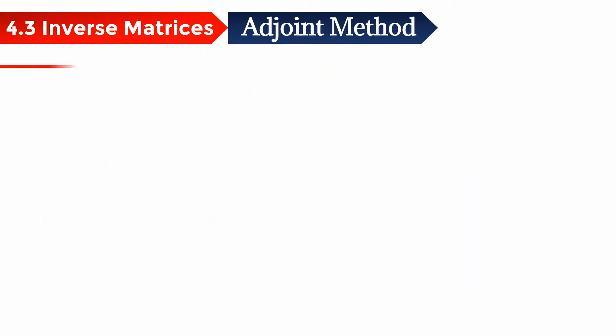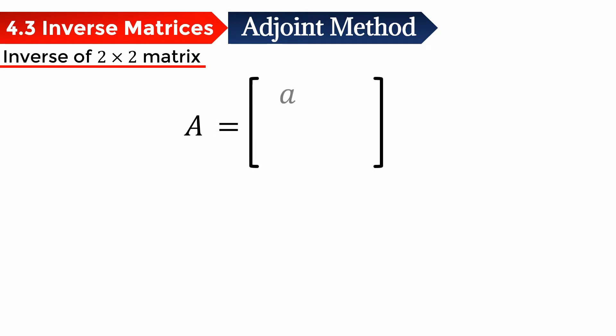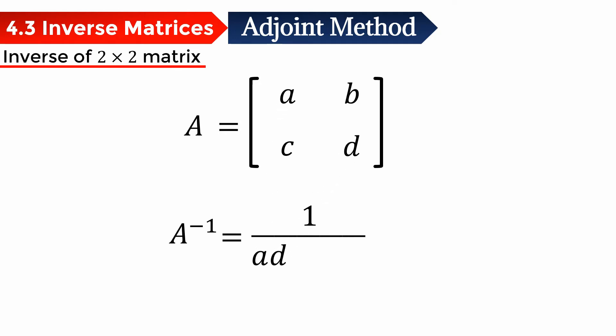In this video, we will only be focusing on how to use the adjoint method to find a 2x2 inverse matrix only. Let's say we have a matrix A with the elements A, B, C, D. So to find the inverse for a 2x2 matrix, we can use this formula. So A inverse is 1 over A times D minus B times C, or this is just 1 over the determinant of matrix A.